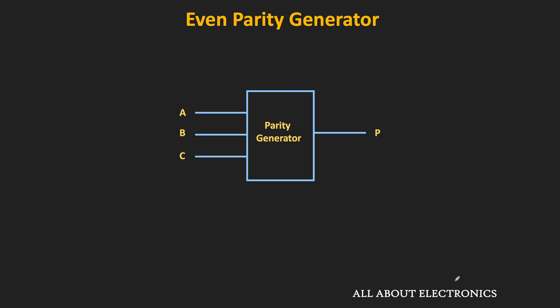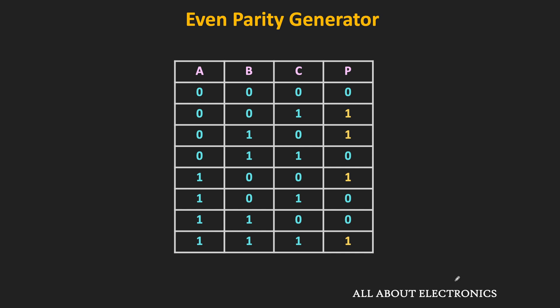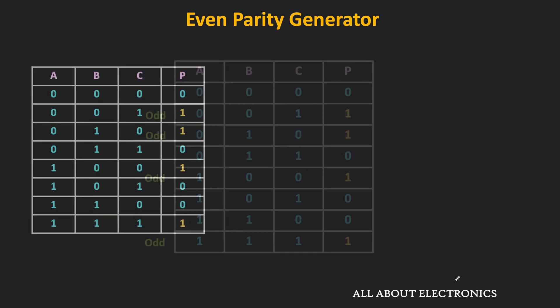To design the circuit, first let us see the truth table of this parity generator. For the 3 bits, we have a total of 8 different combinations. The output p will be equal to 1 when the total number of ones in the data bits is equal to odd. As you can see, for 4 different combinations this output p will be equal to 1, and in all 4 cases the total number of ones in the data bits is equal to odd.